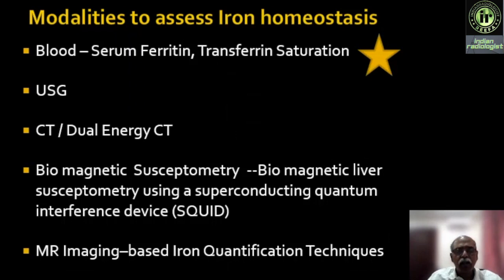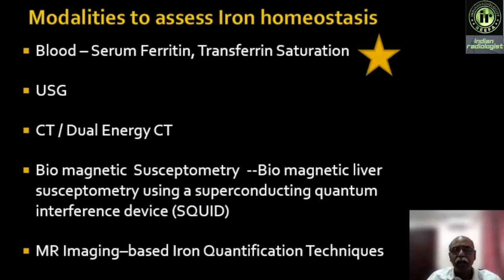The modalities to assess iron homeostasis in the body are: number one, serum ferritin and transferrin saturation; ultrasound abdomen — not very useful; CT, to a limited extent. On plain CT scan, an attenuation value more than 75 to 80 HU is suspicious for hepatic iron overload status. Biomagnetic susceptometry is not widely used. MRI is the modality of choice today — it is the standard of care in many iron overload states, especially transfusional hemochromatosis.